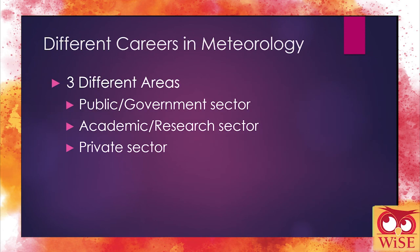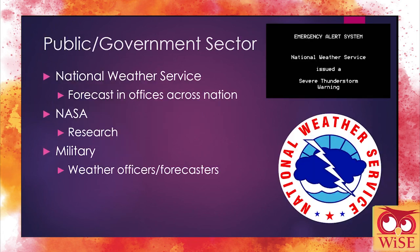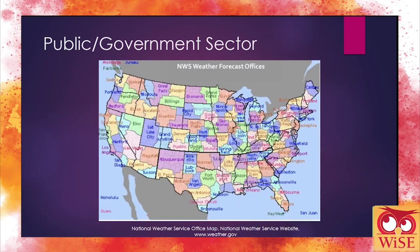What are the different careers in meteorology? You have three areas: the public and government sector, the academic research sector, and the private sector. In the public government sector, you work for the National Weather Service, which has forecast offices all across the nation. You can work at NASA and do research, or forecast for the military as a weather officer. This map shows all the different National Weather Service Forecast Office locations across the nation — each state has more than one because one station couldn't possibly forecast for an entire state.